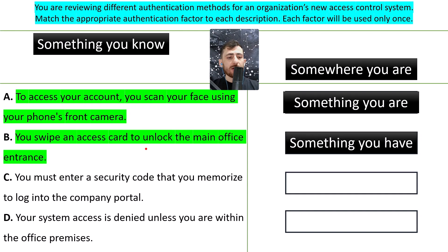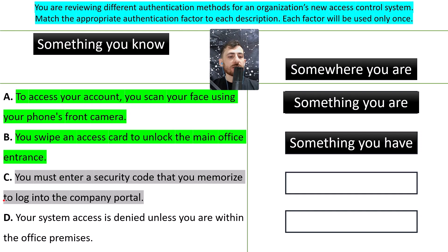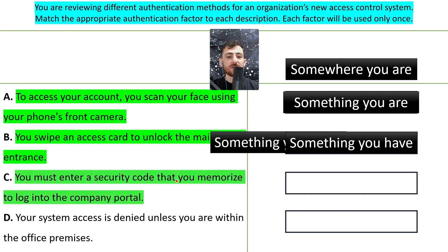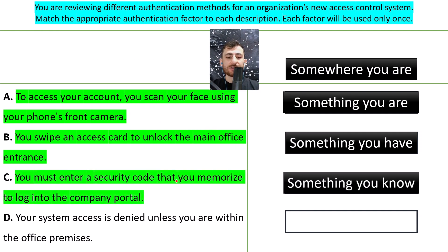How about C: You must enter a security code that you memorize to log into the company portal. That's pretty much obvious — it's something you know. The access code that you memorize is something that you know.